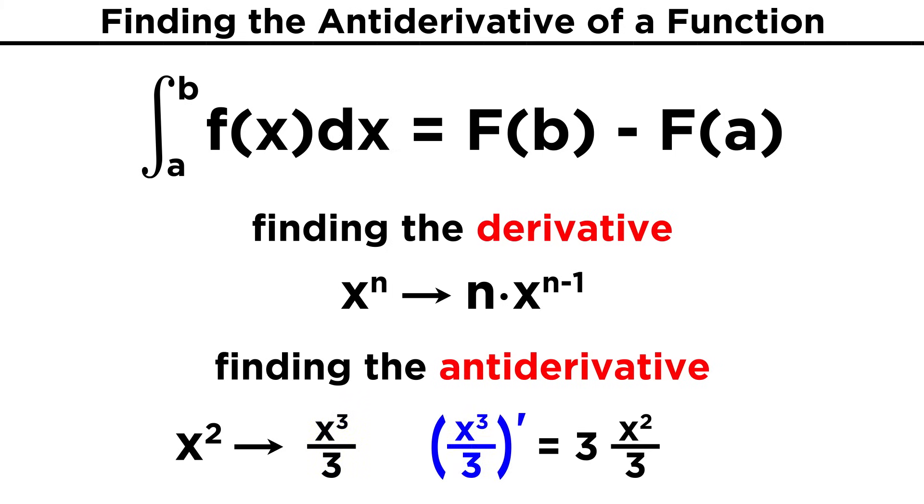We can verify that this is correct by taking the derivative. Three comes down here, and the exponent goes to two. The threes cancel, and we are left with x squared, which is what we started with.